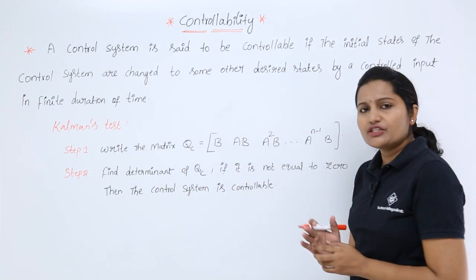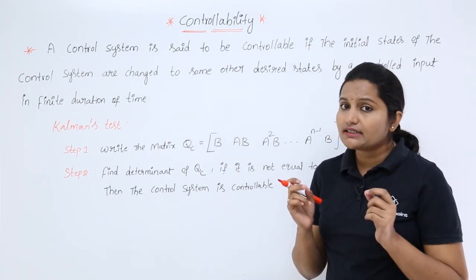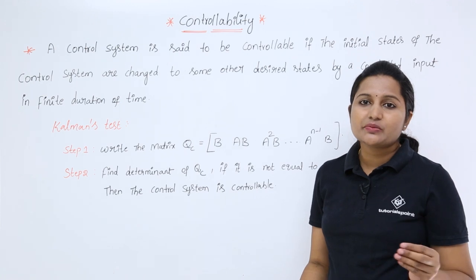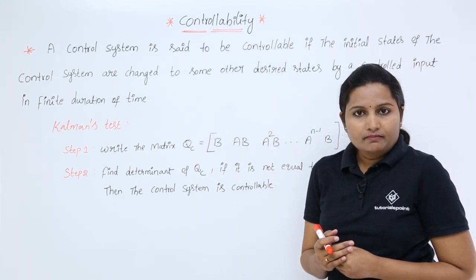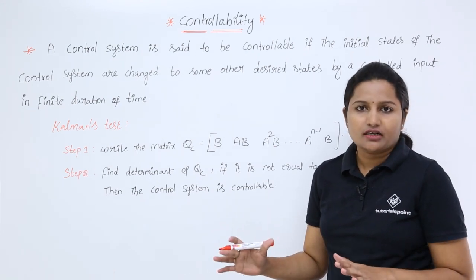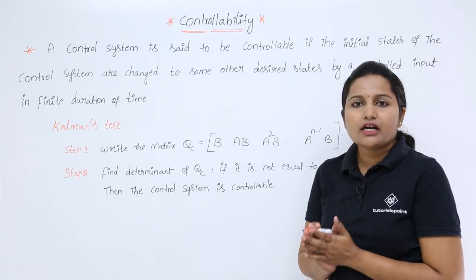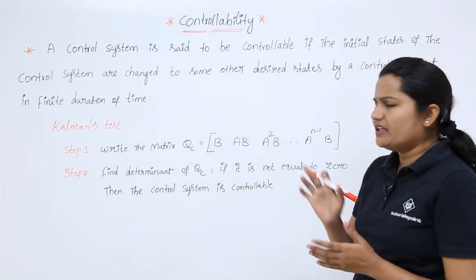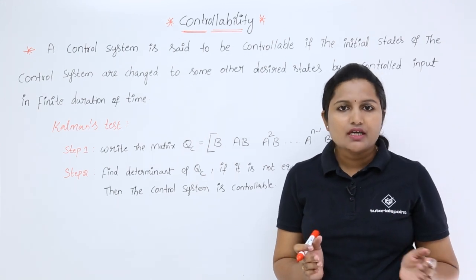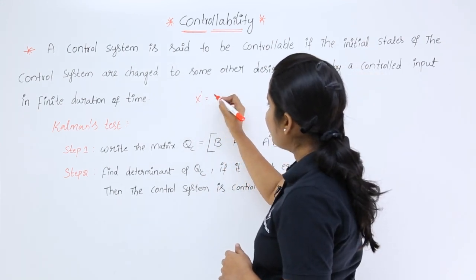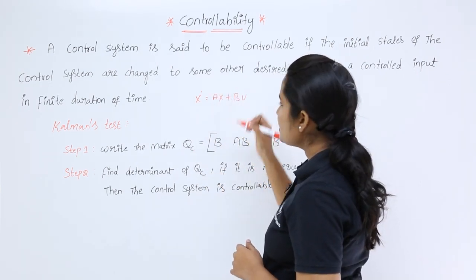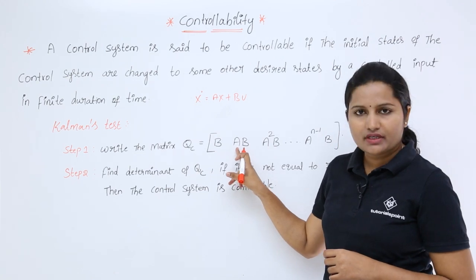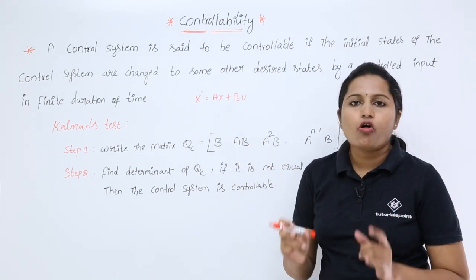Now, how can we check whether a given control system is controllable or non-controllable? Some systems may be controllable, and for some systems we cannot control. So here are the steps to identify controllability. First of all we need to know the matrices A and B. We already discussed the state equation: x-dot is equivalent to Ax plus Bu. Whatever A and B are there in that state equation, we take those here.